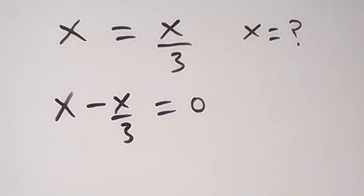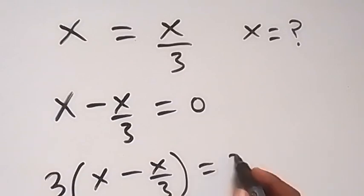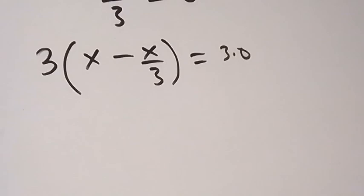Let's multiply both sides by 3, so we multiply this side by 3. 3 multiply by x minus x over 3 equals 3 multiply by 0. When we open this bracket, we have 3 times x, that's 3x, then minus 3 times x over 3.